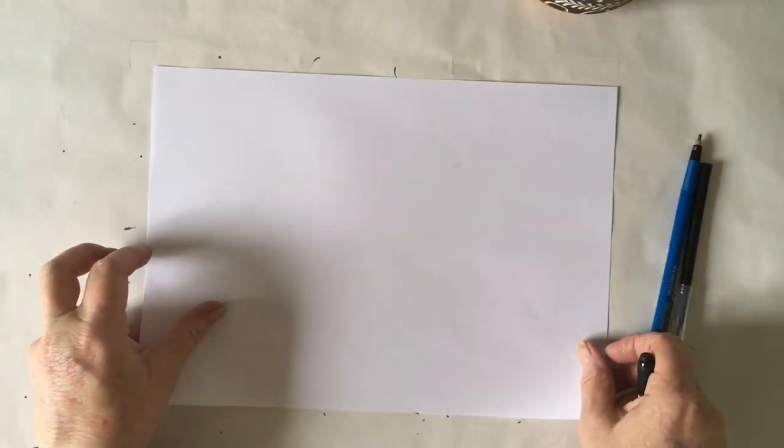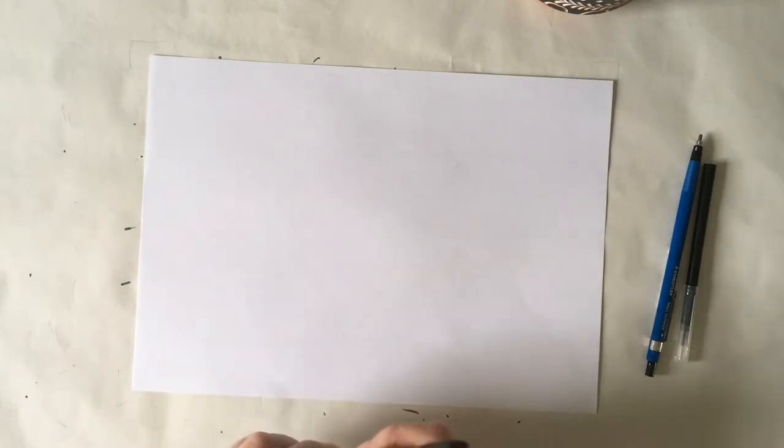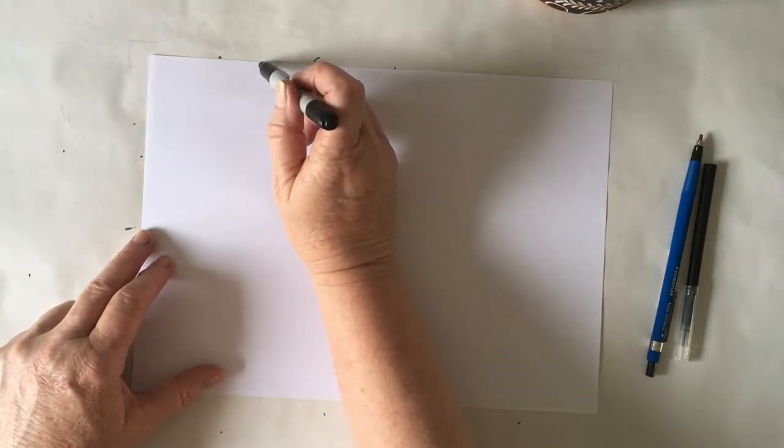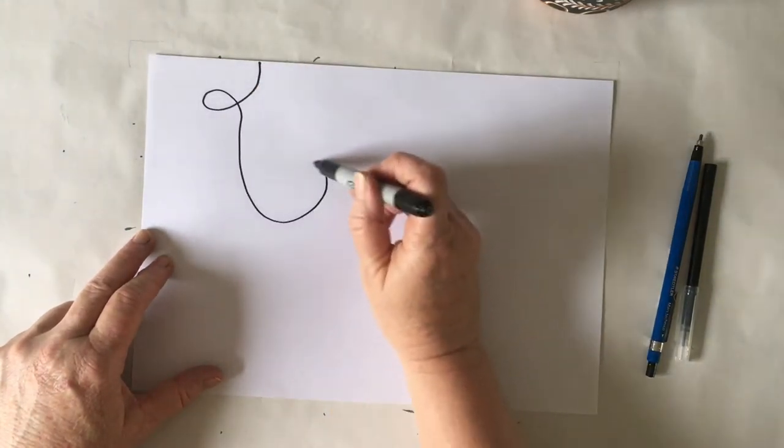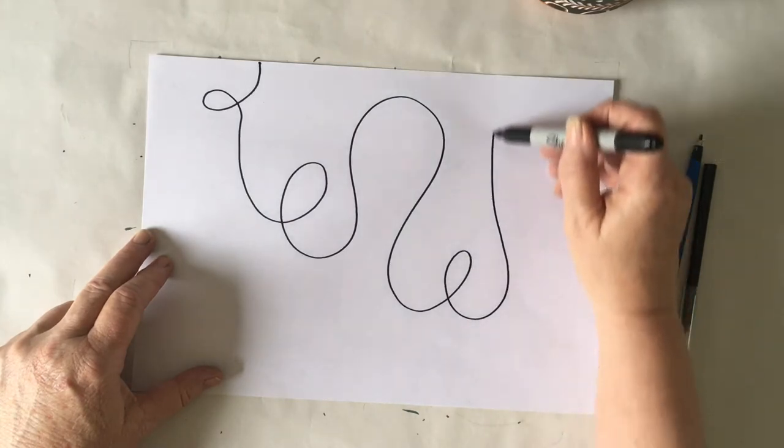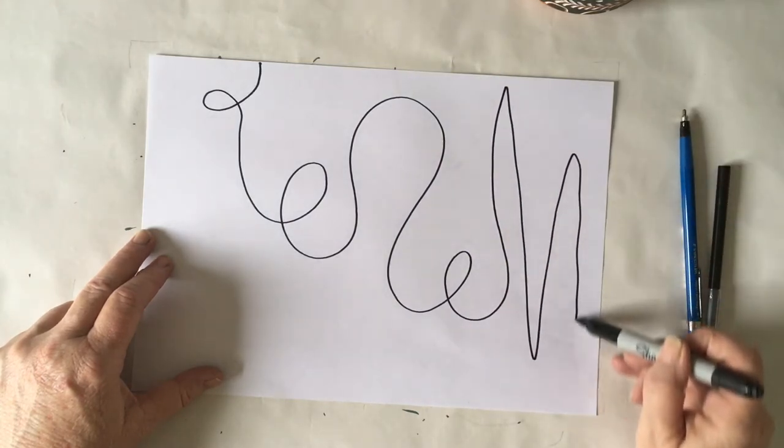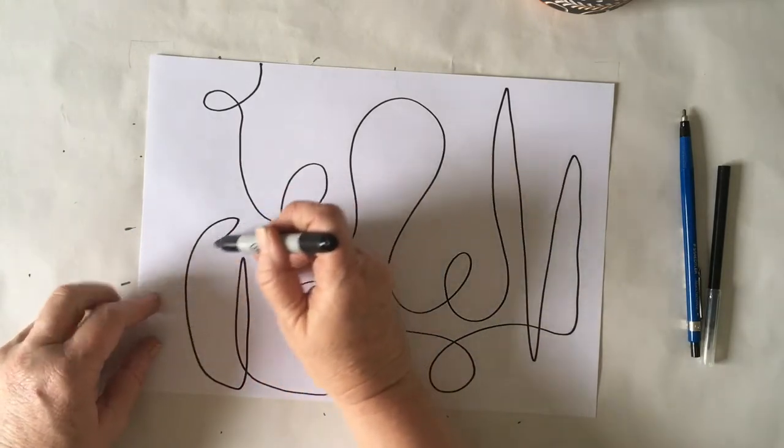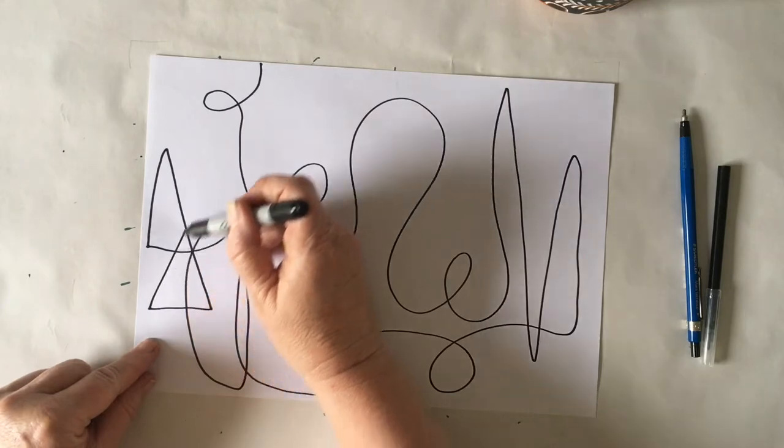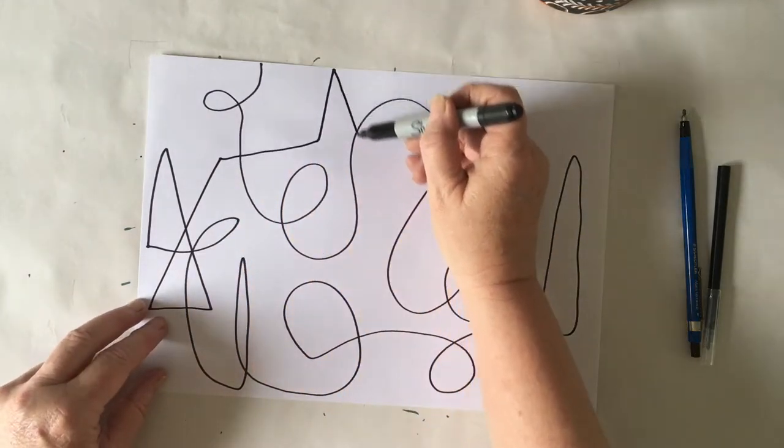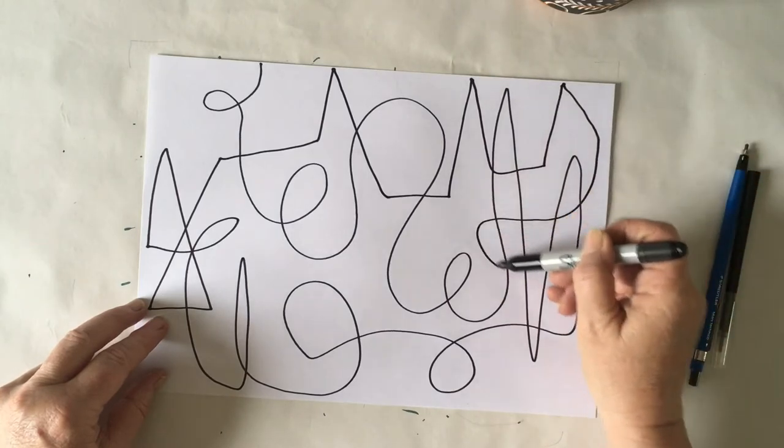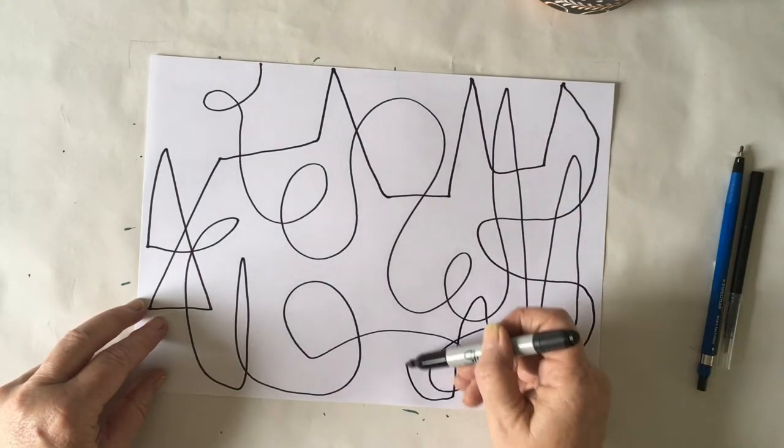So you've got your paper and you've got your marker of some kind and it's just a matter of starting from somewhere and moving your hand. And I would say vary your marks. If you find you're doing a lot of twirls like I am, put in some lines, some straighter lines, so that your shapes are varied and just enjoy the flow.